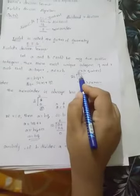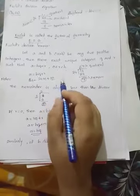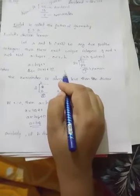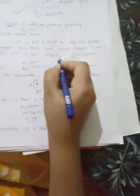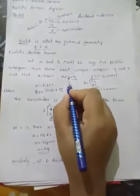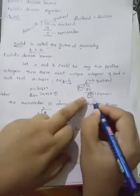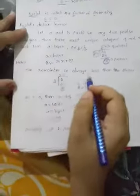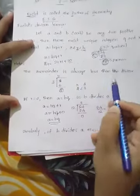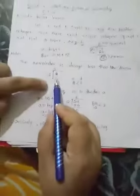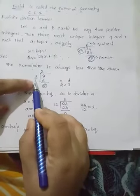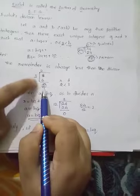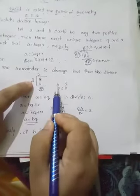This is the remainder and this is the quotient. This is Euclid Division Lemma — when you have two positive integers, you will get quotient and remainder, which are also integers. Note that R is less than B, meaning the remainder is less than the divisor. Here, 10 is less than 24. Key point: the remainder is always less than the divisor. For example, 8 divided by 3 — 3 times 2 is 6, remainder is 2. So 2 is less than 3, confirming the remainder is less than the divisor.